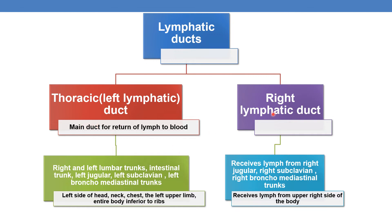The right lymphatic duct receives lymph from the right jugular, right subclavian, and right bronchomediastinal trunks — that is, it receives lymph from the right upper side of the body.